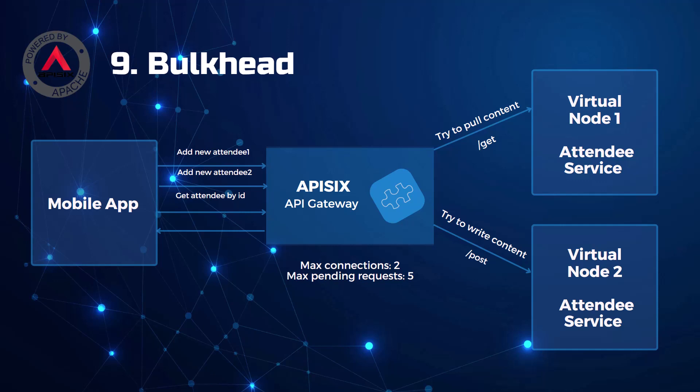Last but not least: bulkhead. Elements of an application are isolated into pools so that if one fails, the others will continue to function. In this pattern, the failure of one component does not affect another. The API gateway bulkhead is capable of isolating resources by routing with virtual nodes — for example, if one virtual node has already reached the maximum number of allowed concurrent calls, you can always use the next virtual node for other operations, managing connections and pending requests right in the API gateway.